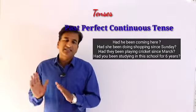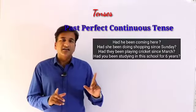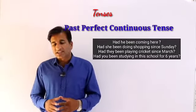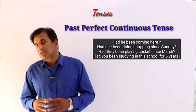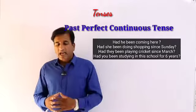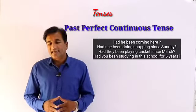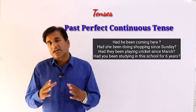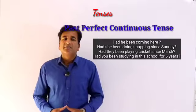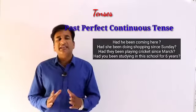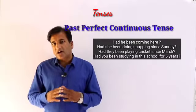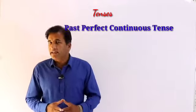'Had they been playing cricket since March?' — کیا وہ مارچ سے cricket کھیل رہے تھے؟ 'Had you been studying in this school for six years?' — کیا تم اس سکول میں چھ سال سے پڑھ رہے تھے؟ یہ تھے Past Perfect Continuous اور Progressive Tense کے جملے — simple، negative اور interrogative۔